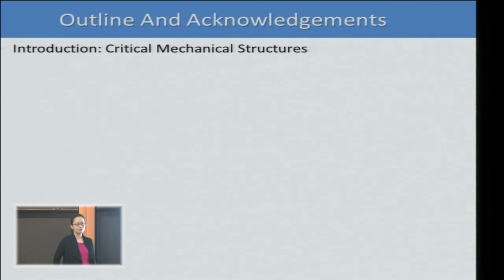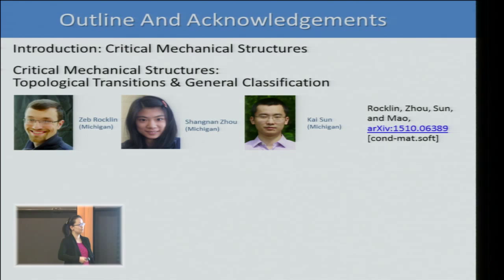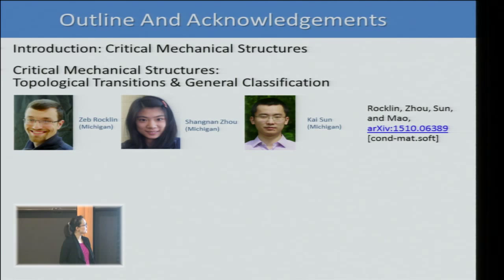Let me give you an outline and acknowledge my collaborators. The first part will be an introduction to critical mechanical structures, and then I will talk about topological transitions and general classification of critical mechanical structures. This is done in collaboration with my postdoc Zeb Rocklin, my undergraduate student Shang Dan Zhou, and my colleague Kai Sang. Here is our newly posted manuscript on this work.